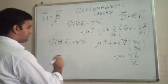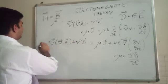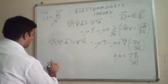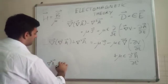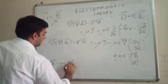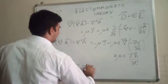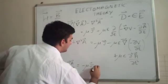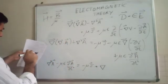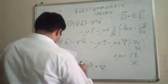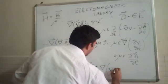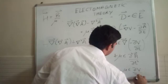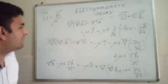Rearranging by moving terms to the left-hand side, we obtain: del-squared A minus mu epsilon d²A/dt² equals minus mu J minus gradient of (divergence of A plus mu epsilon dV/dt). This is starting to look like an inhomogeneous wave equation for the vector potential A, with an additional gauge-dependent term.